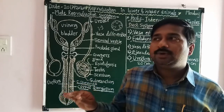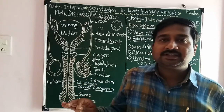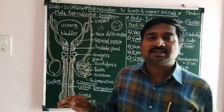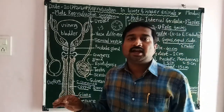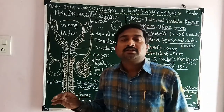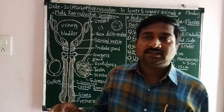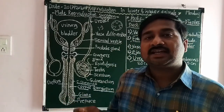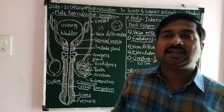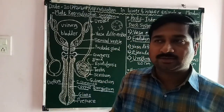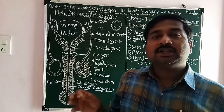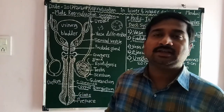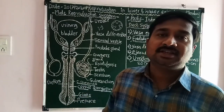Where are they present? They are present in the sac-like structure at the thigh region. These are called the primary sex organ.